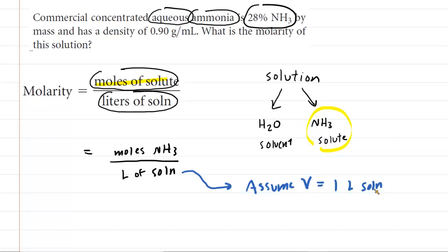It turns out you can make another assumption, you can pick any number you want for the volume, but the simplest assumption is to use one liter as our volume of solution. We already have the liters of solution because we're assuming that it's one. The challenge of the question is determining the moles of the NH3. That's where we're going to turn next.